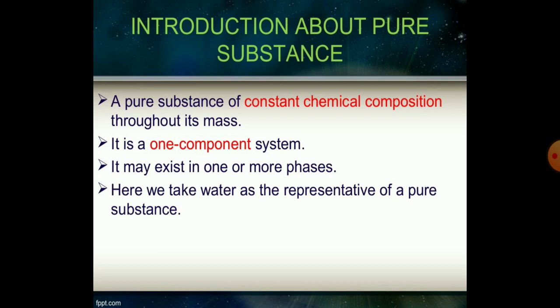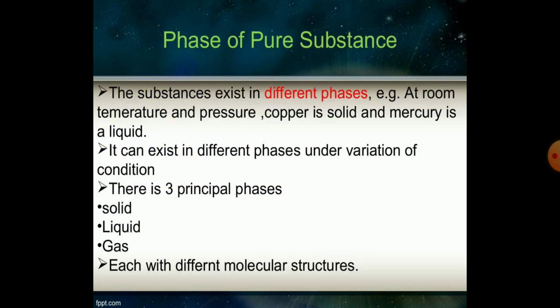A pure substance has constant chemical composition throughout its mass. It is a one-component system that may exist in one or more phases. Taking water as a representative pure substance, it exists in different phases depending on conditions.